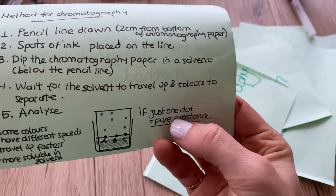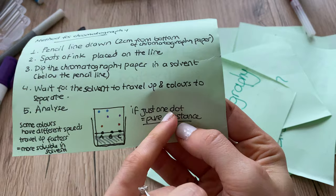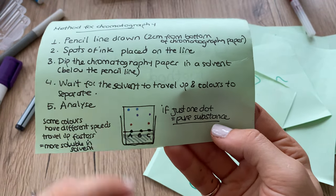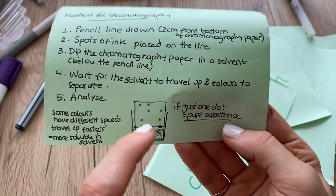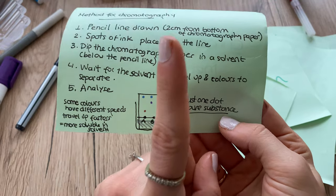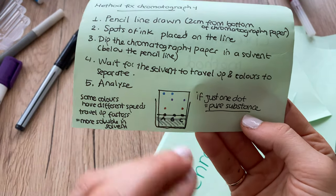If one sample has just one dot, that means it's a pure substance. If it has many dots, it means that it's a mixture. So when it's just one dot, pure substance. When it has many dots, it's a mixture.